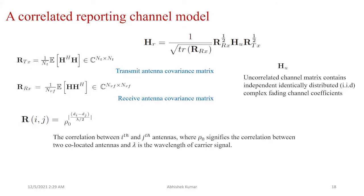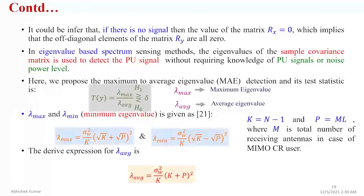For the correlated reporting channel model, H is replaced with H_r, the correlated reporting channel matrix. Here, R_tx is the transmit antenna covariance matrix, R_rx is the receive antenna covariance matrix, and H_u is the uncorrelated channel matrix with i.i.d. complex Gaussian channel coefficients. The correlation r_ij between the i-th and j-th antenna is given by ρ0, which quantifies correlation between two antennas, and λ is the wavelength. The test statistic T_y = λ_max / λ_average is compared against threshold δ, where λ_max and λ_average are obtained from expressions where k = N-1 and p = M·L, with M being the total number of receive antennas and N the total number of received samples.